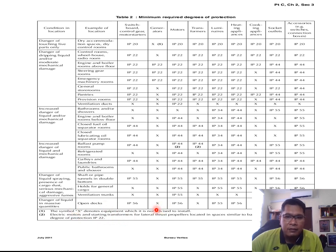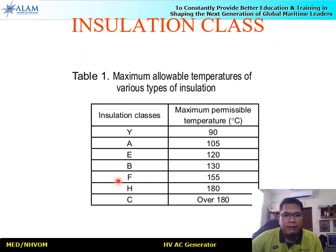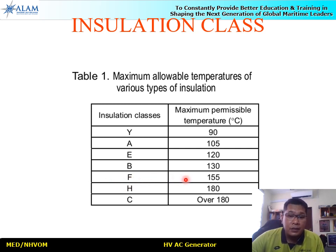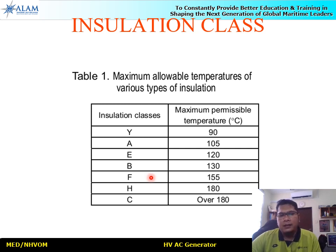From the specs, both generators have insulation class F. The insulation class table shows maximum allowable temperatures for various insulation types; Class F allows a maximum permissible temperature of 155°C. Since both generators share the same class, their operating temperatures are essentially the same. On board ships, the alarm limit for high winding temperature — for either low or high voltage generators — is typically around 80 to 90°C.